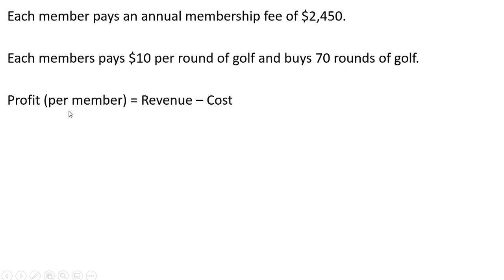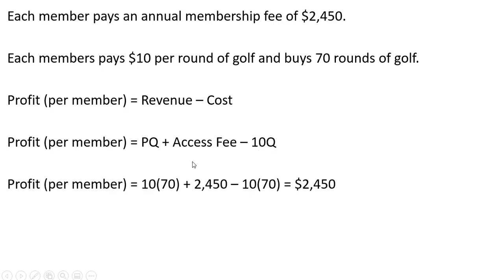The profit in this case on a per member basis is revenue minus cost, where revenue is going to be the price times the number of rounds of golf purchased plus the access fee. That's part of the revenue here minus the cost, which is subtracting out the cost equation minus 10Q. So plugging in everything we know, we get a profit of $2,450 per member.